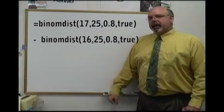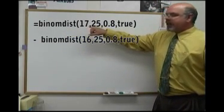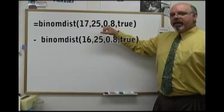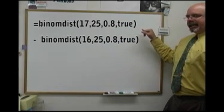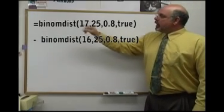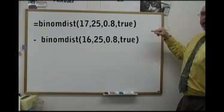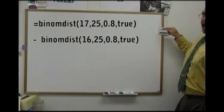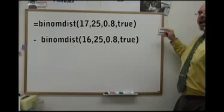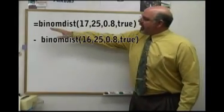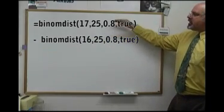So what you got to do in Excel spreadsheet is you do equal BINOMDIST, parentheses, 17 comma 25 comma your percent is point eight comma, minus—here comes same thing—BINOMDIST, parentheses, 16 comma 25, point 8 comma, close parentheses, enter. What you're doing is you're finding out what it is 17 or less, subtracting out what 16 or less is.